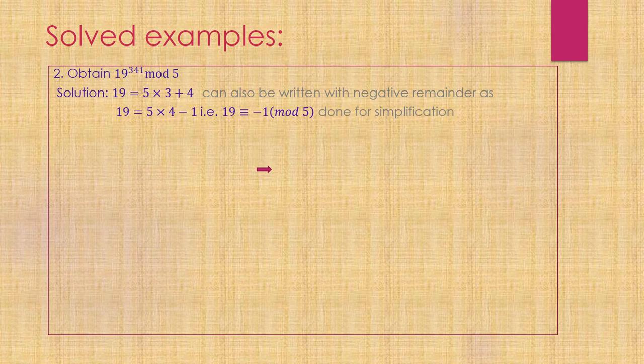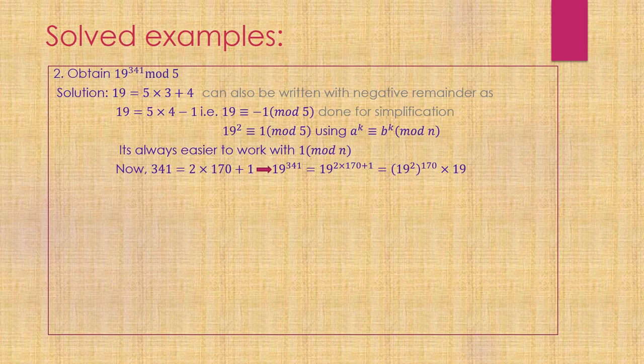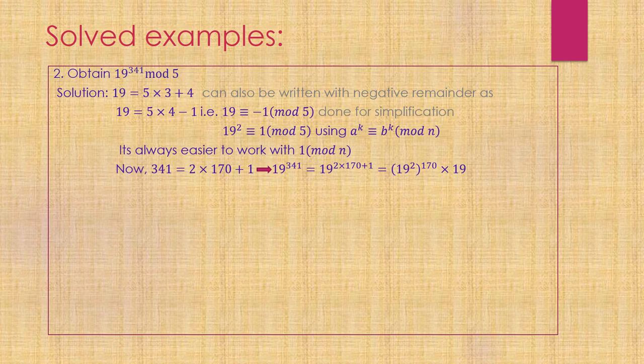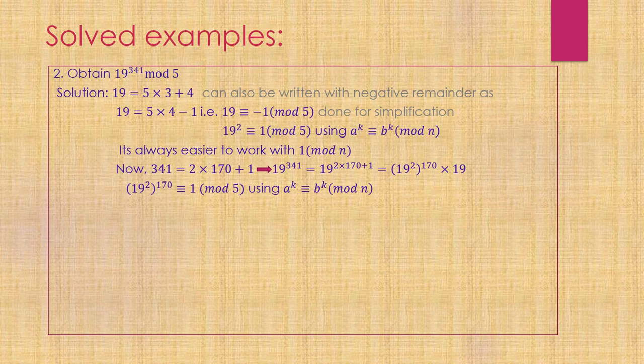I can easily say 19^2 is congruent to 1 modulo 5. We did this because it's easier to work with 1. Now, 341 can be written as 2 times 170 plus 1. So 19^341 can be written as 19^340 times 19. Now 19^340 equals (19^2)^170, which is congruent to 1^170, which equals 1 modulo 5.